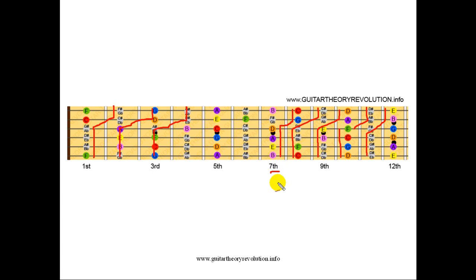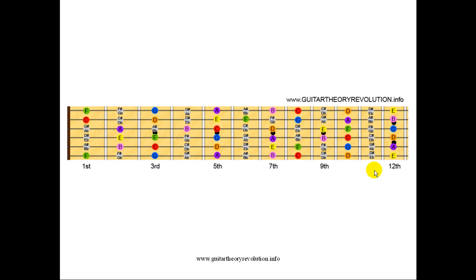You can see that the circle of fourths and fifths is right there on the fretboard because of the way it's tuned — in fourths from the low string to the high string, and obviously the opposite direction is in fifths from the high string to the low string. This is something not many guitar players know. The essential DNA of western music is right there on the fretboard, and it's present in several ways. The way it spirals along the fretboard is one of the most important ways you can see the circle of fourths and fifths on the guitar.